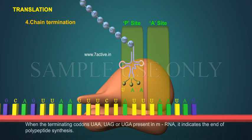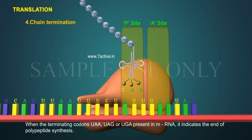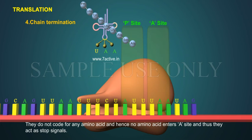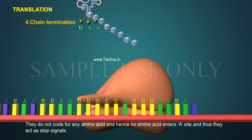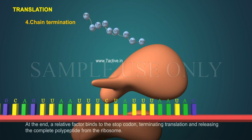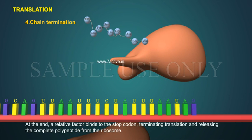Chain Termination: When the terminating codons UAA, UAG, or UGA are present in mRNA, it indicates the end of polypeptide synthesis. They do not code for any amino acid, and hence no amino acid enters the A site, and thus they act as stop signals. At the end, a release factor binds to the stop codon, terminating translation and releasing the complete polypeptide from the ribosome.